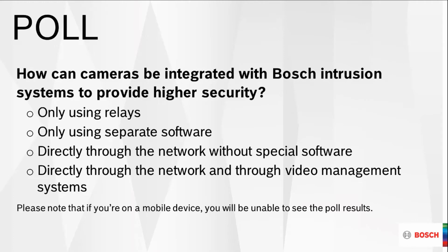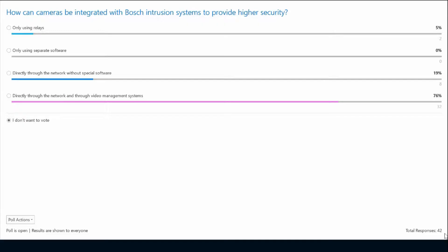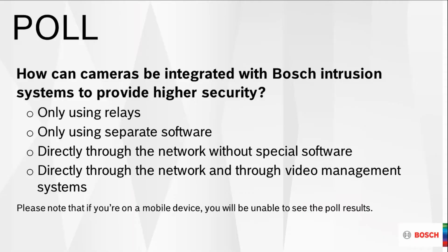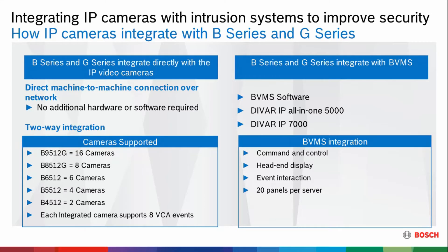First, I'd like to start out with a poll. The question is: how can you integrate a camera with a Bosch intrusion system to provide higher security? Most of the answers are coming in with number three or four — directly through the network without special software, and directly through the network and through video management. The good news is you're all right. This can be accomplished both directly through a network and through special software, but the most unique way is directly through that network.